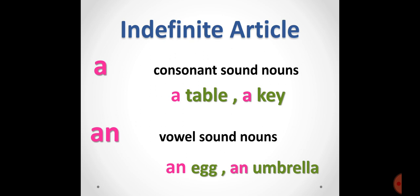Then there is 'an' — 'an' also means one. Now, what is the difference between 'a' and 'an'? Both have the same meaning, which is 'one.' Remember: we use 'a' with consonant sound nouns and we use 'an' with vowel sound nouns. All nouns which start with a vowel — vowels are a, e, i, o, u — if a word starts with a vowel, we always use 'an'.